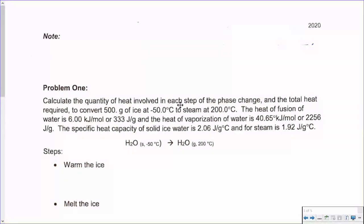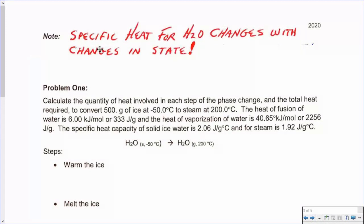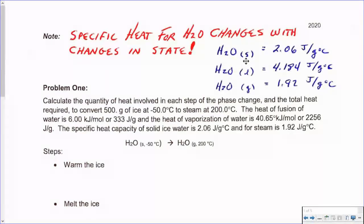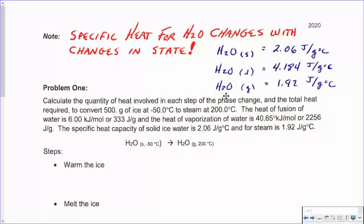Now we're going to take a look at some calculations. First thing to point out: the specific heat for water changes with changes in state, something you have to be alert for. Water in its solid state has a specific heat of 2.06 joules per gram·°C. Water in its liquid state has the familiar 4.184 joules per gram·°C. And water in its gaseous state, 1.92 joules per gram·°C. So it does change with differences in state — we've got to be alert for that.